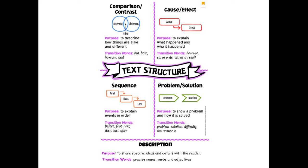The next text structure is sequence. The purpose of sequence is to explain events in order. You may see transition words like before, first, next, then, last, and after.